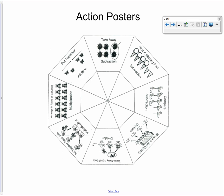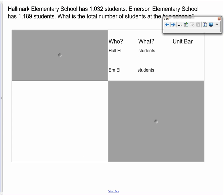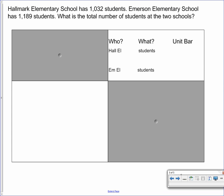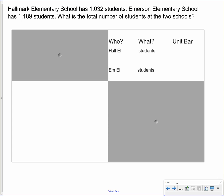So here is our problem. Hallmark Elementary School has 1,032 students. Emerson Elementary School has 1,189 students. And I want to know what is the total number of students at the two schools.